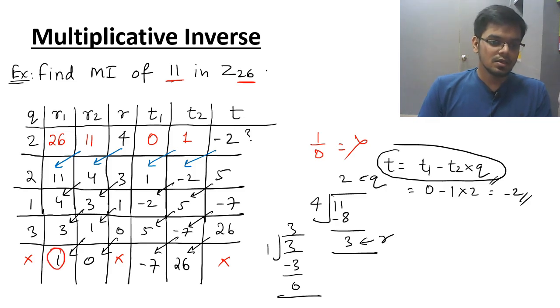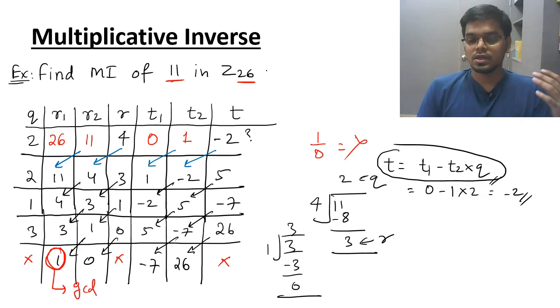The answer is GCD is 1 and this is always there when you are doing multiplicative inverse. GCD will always be 1. GCD is 1 and this value. This value is the value of multiplicative inverse. So the multiplicative inverse of 11 in Z subscript 26 is minus 7.